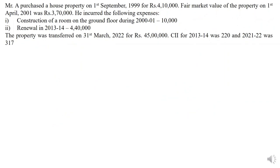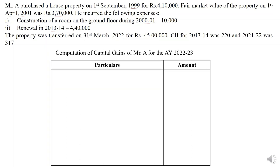The next question: Mr. A purchased a house property on 1st September 1999 for Rs. 4,10,000. Fair market value of the property on 1st April 2001 is Rs. 3,70,000. He incurred expenses: construction of a room in the ground floor during 2000-2001 — Rs. 10,000; renovation in 2013-14 — Rs. 4,40,000. The property was transferred on 31st March 2022 for Rs. 45,00,000. The asset is a house property. If purchased and held for more than 24 months, it is a long term capital asset. The asset was purchased in September 1999 and sold in March 2022 — held for more than 24 months, so this is a long term capital asset.